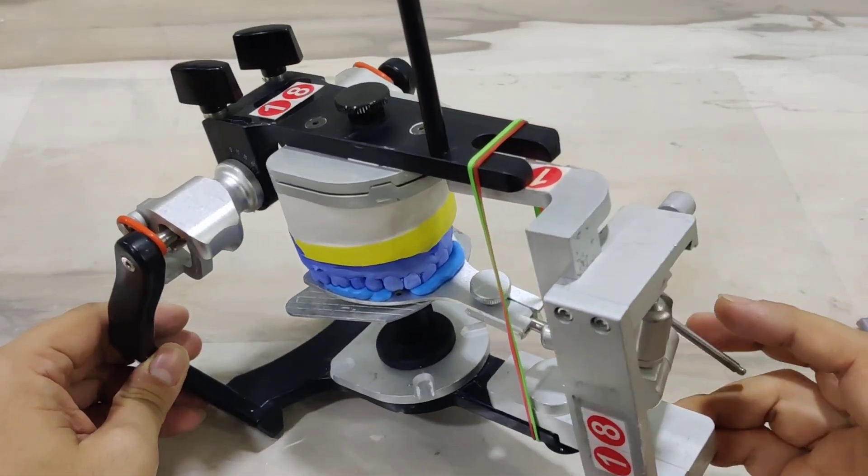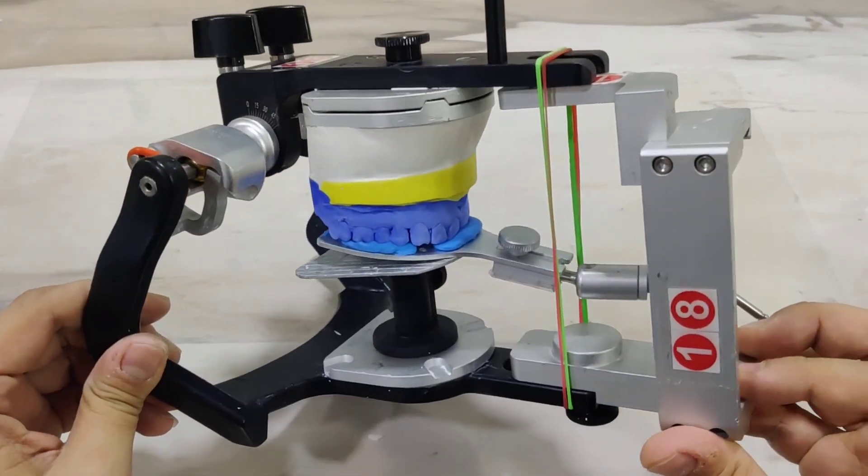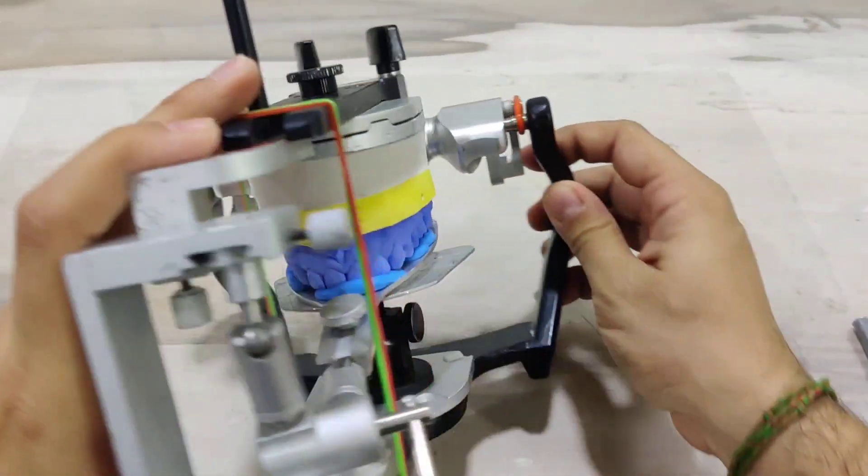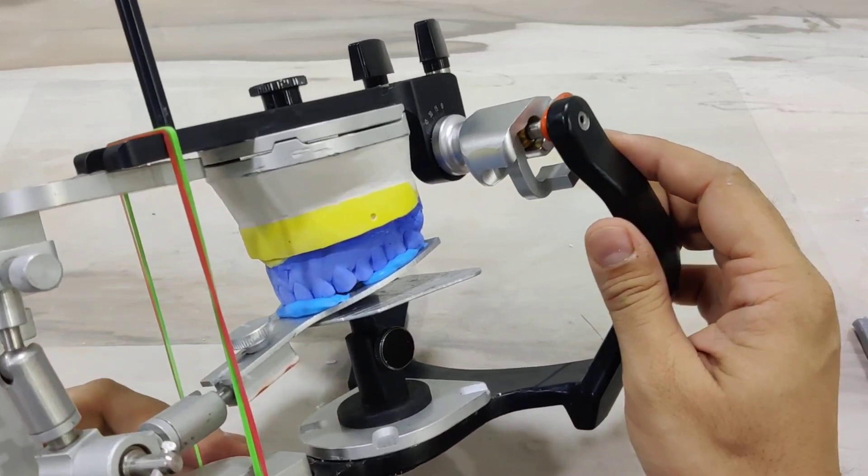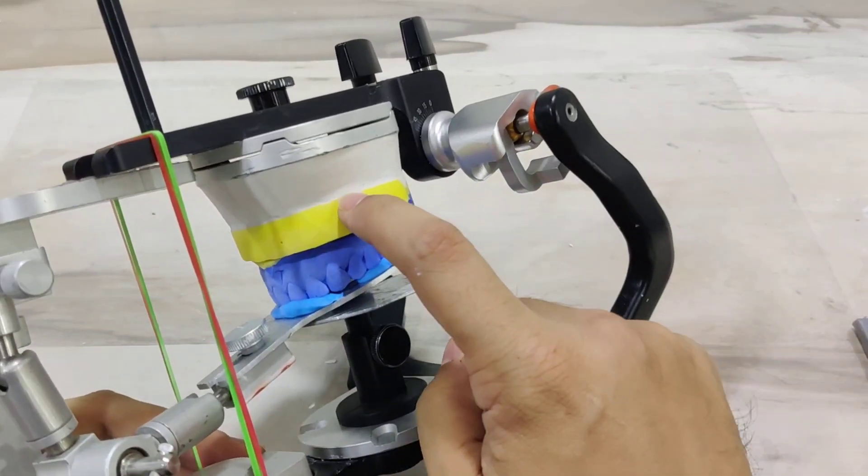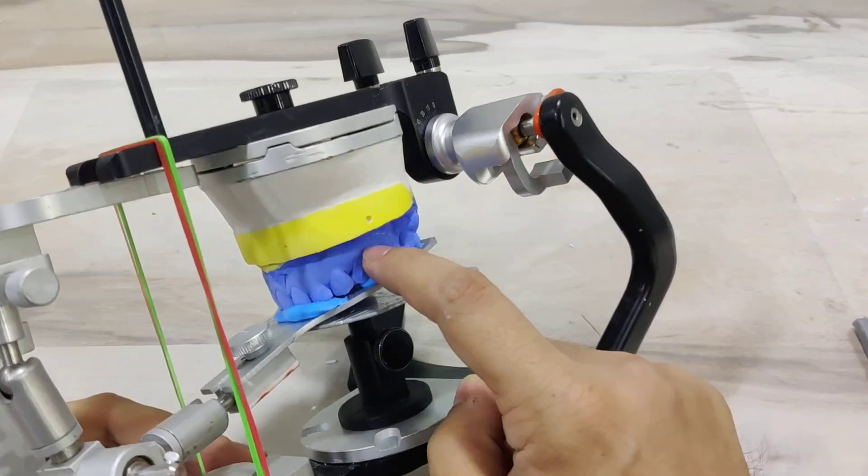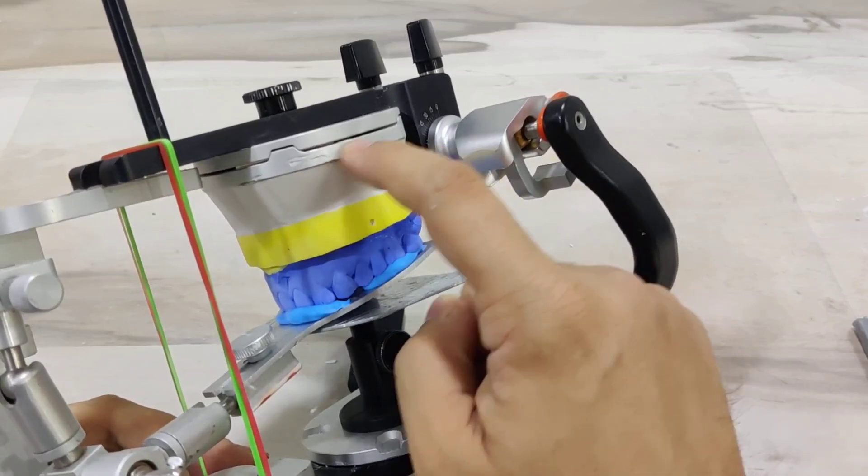This is where we have completed the mounting of the maxillary cast. As you can see, this is how our mounting is supposed to be. It starts from the base of the cast and ends at the base of the mounting plate, does not extend onto the cast or onto the peripheral rim of the plate.